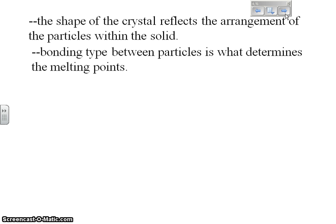Bonding type between the particles is what determines the melting point. So if it's got a low melting point, it's because it's bonded differently than something that has a high melting point. Melting point is determined by bonding type: ionic, covalent, that kind of bond type.